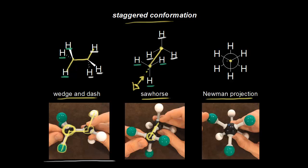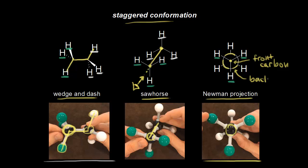This dot or point represents the front carbon. The front carbon is bonded to our hydrogens in green, so we have three green hydrogens here. The front carbon blocks the carbon in the back — you can't see the carbon in the back in this drawing, but we know it's there. In a Newman projection, the circle represents the back carbon. The back carbon is the one that has the hydrogens in white, so these three bonds coming off the circle represent those white hydrogens. You can just see them poking out, even though the front carbon is blocking the back carbon.